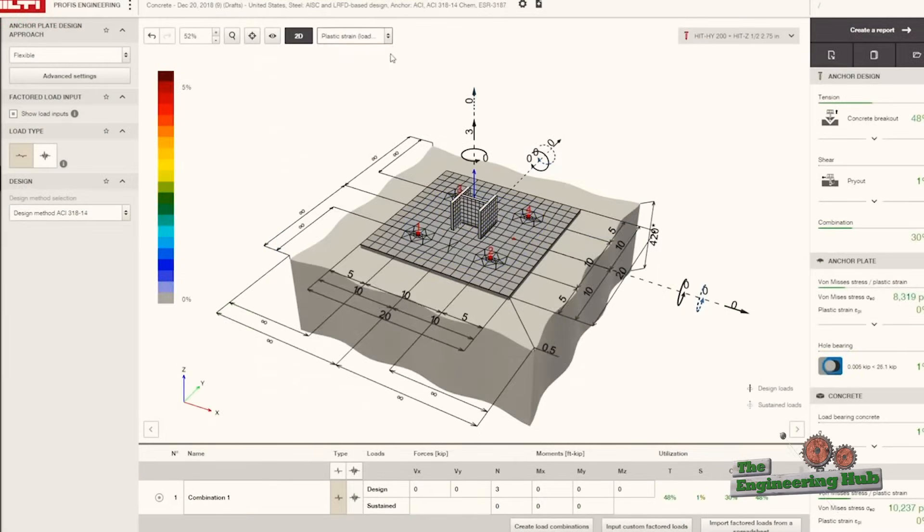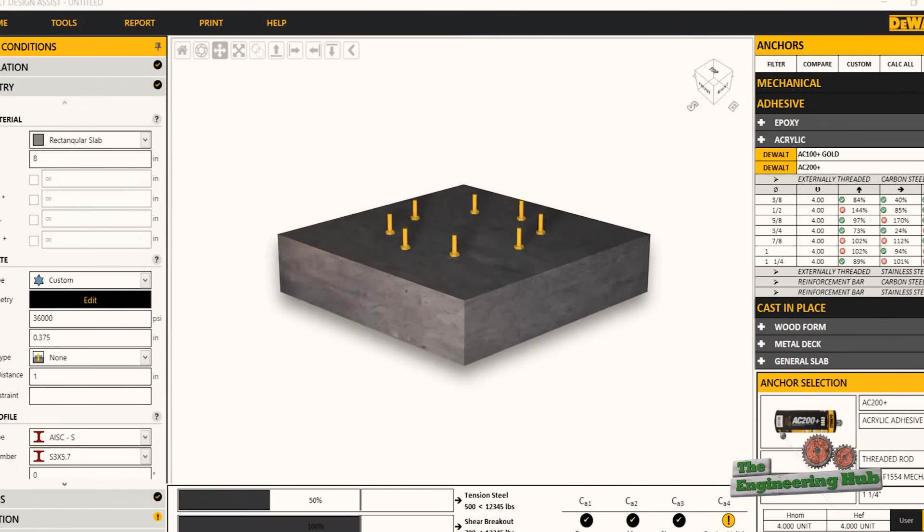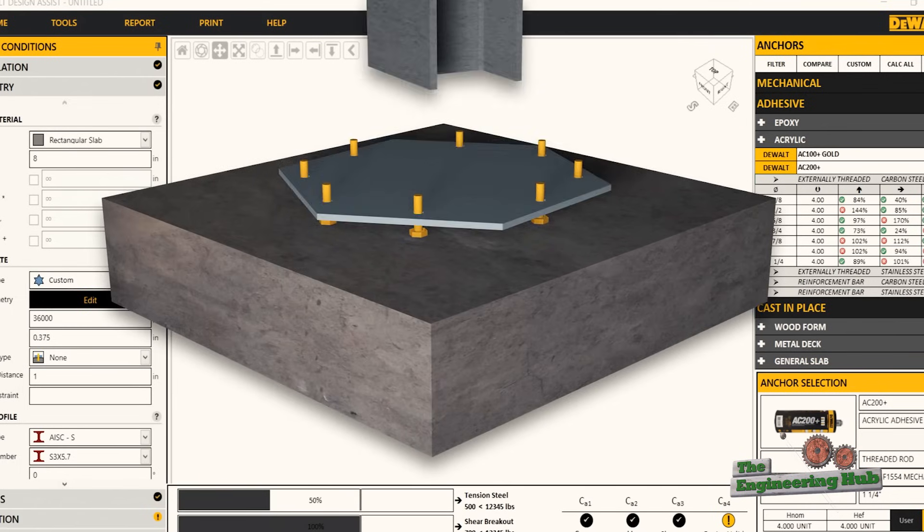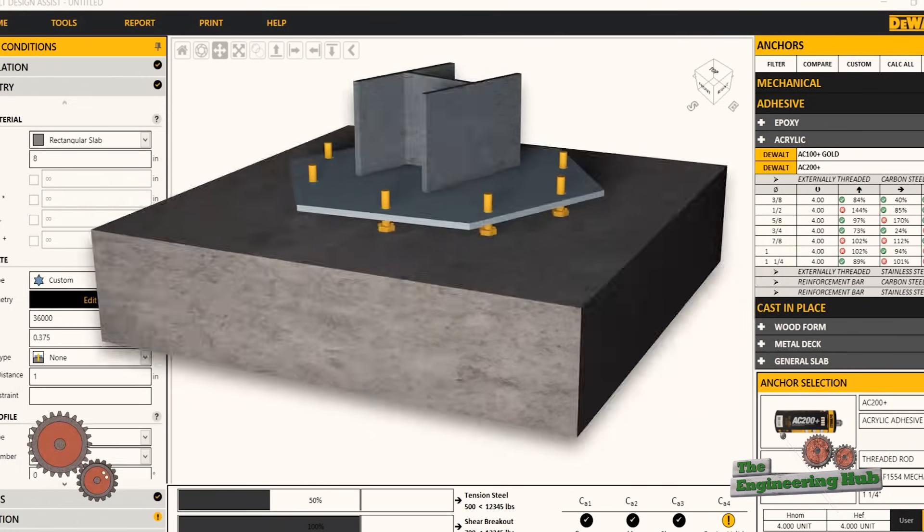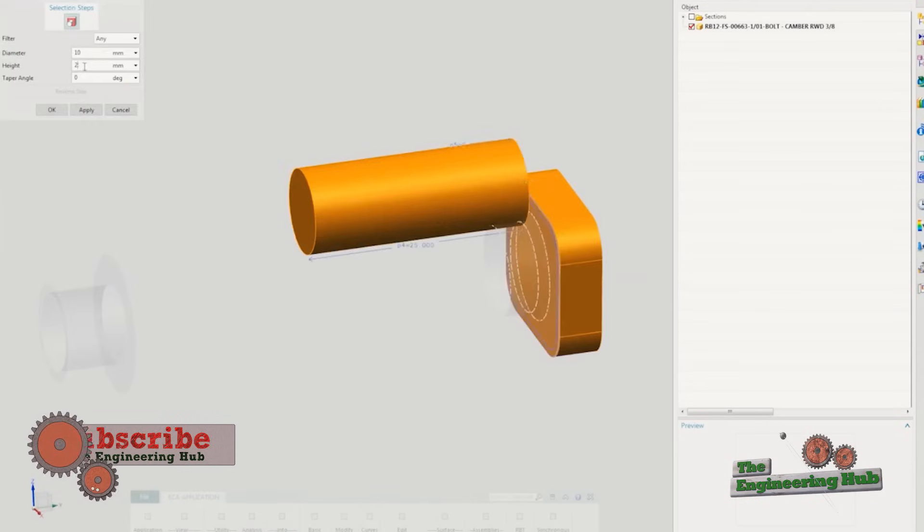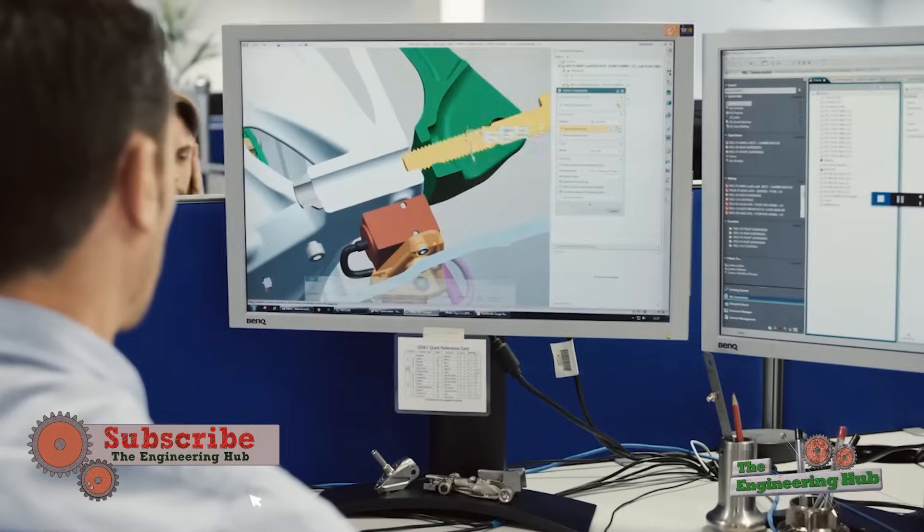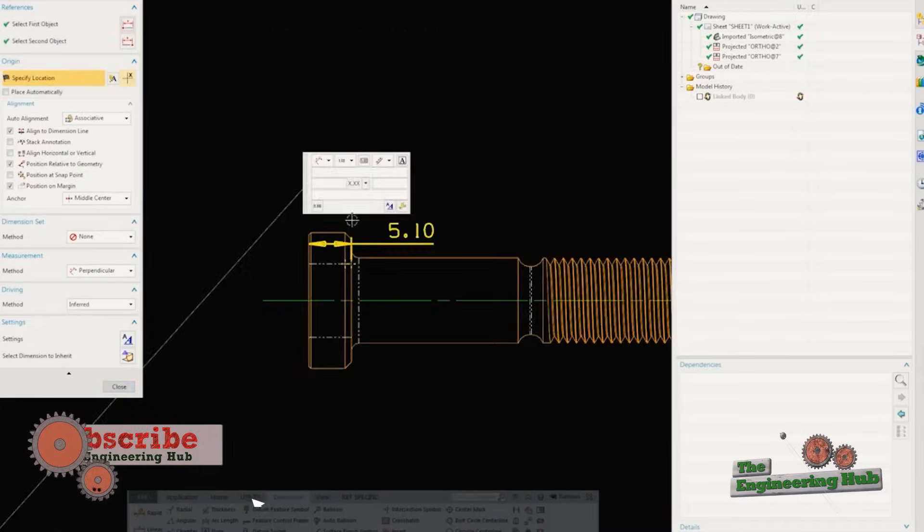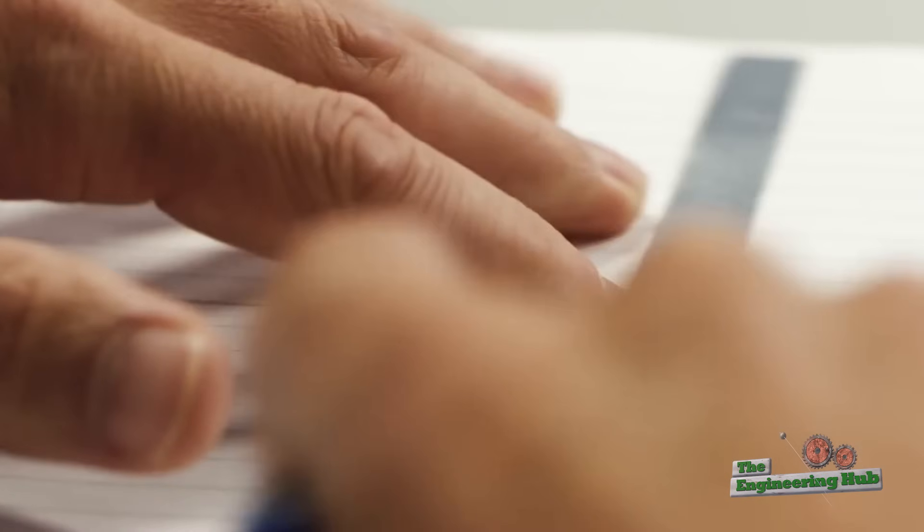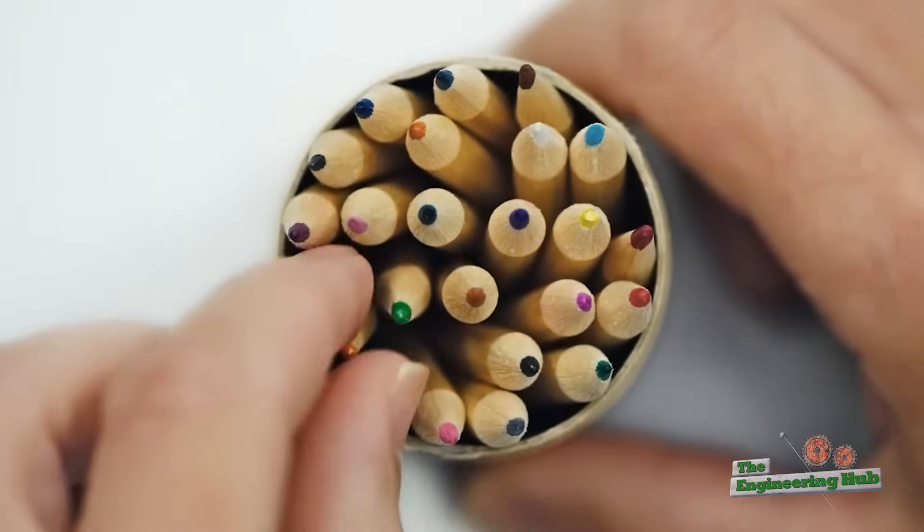Some examples of this are Hilti Profis, Dewalt Design Assist, and Jordal Expert. These softwares allow you to enter loads and geometry to see what anchors can work. The calculations performed in these softwares combine engineering static calculations, building code calculations, and test data from manufacturers.